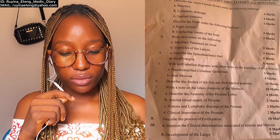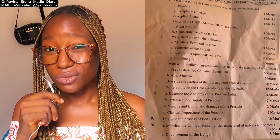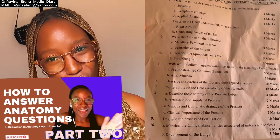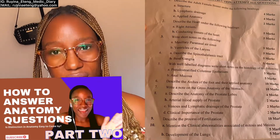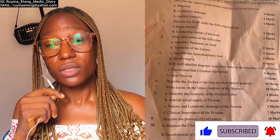Question two said: describe the heart under the following headings — (a) right atrium and (b) conducting tissues of the heart. For right atrium, I beg you, write the introduction. If you haven't watched my video on how to answer anatomy questions in the exam, everything I say here won't fully make sense, so please go and watch that series first — I'll put the link up. Start from your introduction as usual, then draw the diagram of the right atrium.